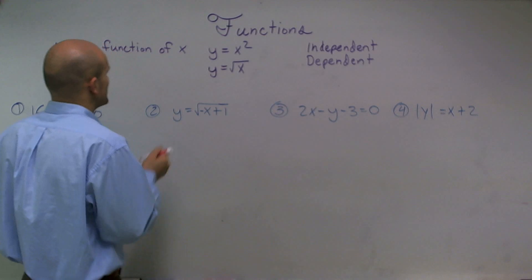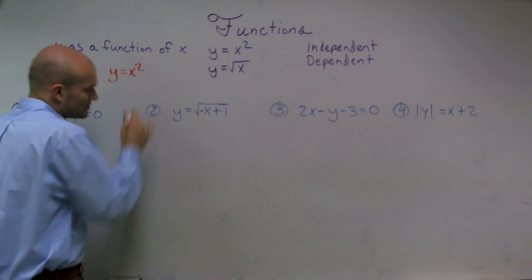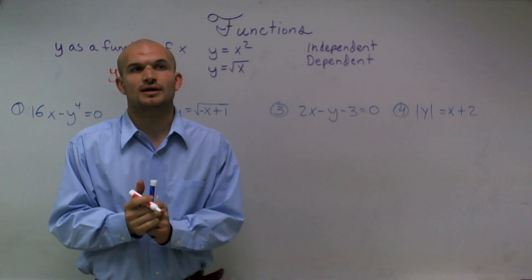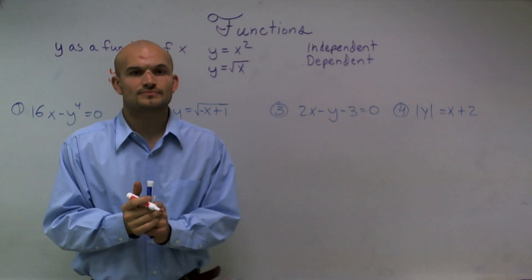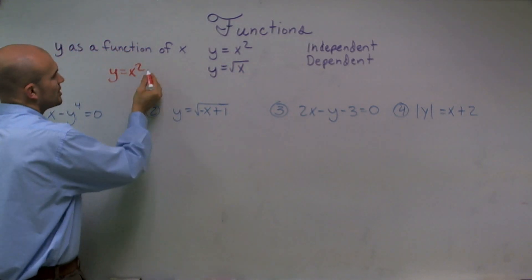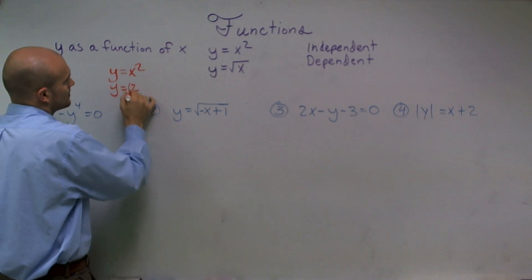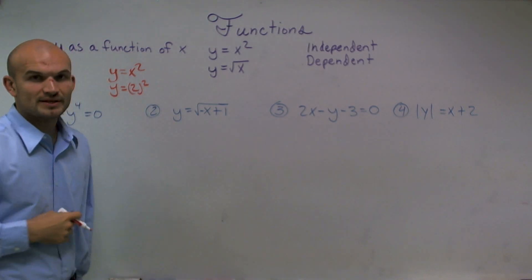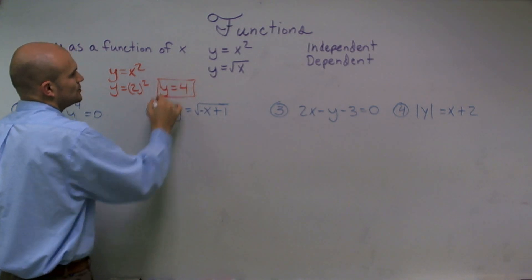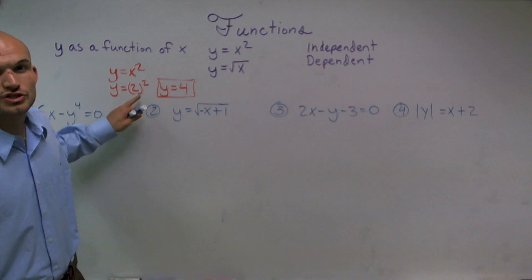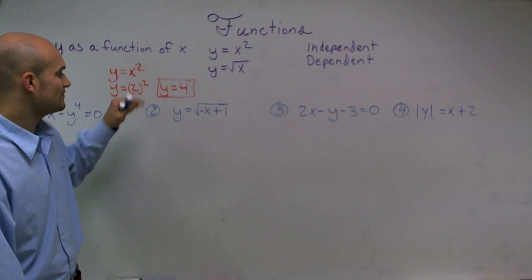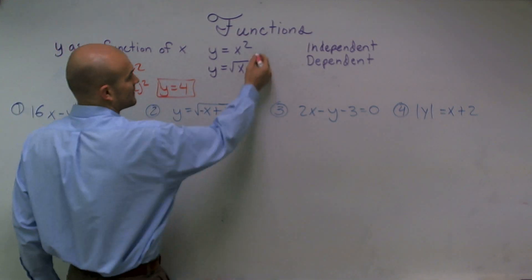Let's take a look at our first equation: y equals x squared. You can pick any value — let's pick the number 2. When I plug in 2, I get y equals 4. That is a unique solution. I can put 2 in there 100 million times and every single time I'm always going to get out 4. So therefore, this is what we call a function.